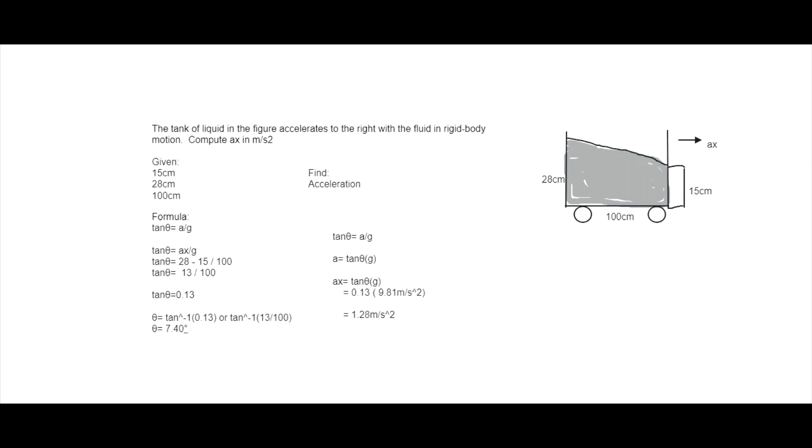So we're going to find the acceleration. And the formula that we're going to use is the formula for the rectilinear translation, which is tan theta equals acceleration over gravity.